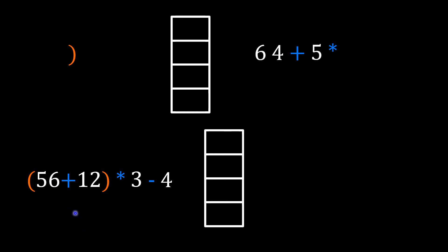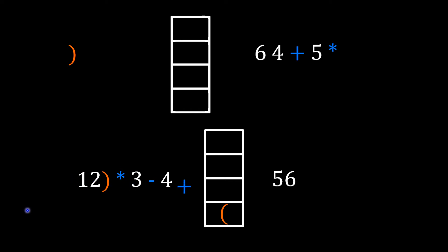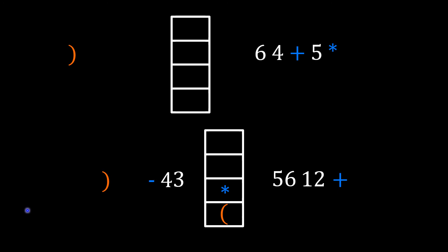We now have a slightly more complicated example. We have an open bracket at the start, which we push onto the top of the stack. The operand 56 moves over to postfix. The plus operator is pushed onto the top of the stack, and then the operand 12 moves over to the postfix notation. We look for the corresponding opening bracket and pop the plus operator to the postfix notation. The multiply operator is then pushed onto the top of the stack, and we move the operand 3 over to the postfix notation.